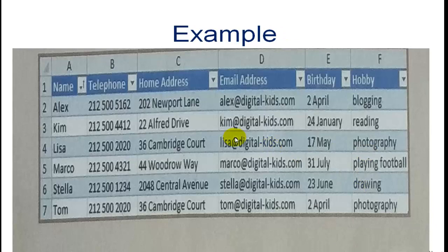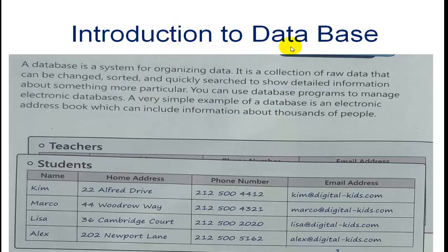Introduction to database: A database is a system for organizing data. It is a collection of raw data that can be changed, sorted, and quickly searched to show detailed information about something more particular. You can use database programs to manage electronic databases. A very simple example of a database is an electronic address book.